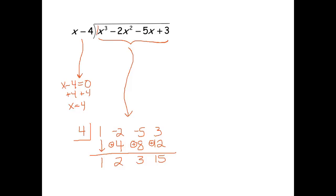So here's where the magic happens. It turns out that these numbers are actually going to give you your answer. The last number is always the remainder. So notice that our remainder is 15. That means that x minus 4 didn't divide evenly into that cubic.